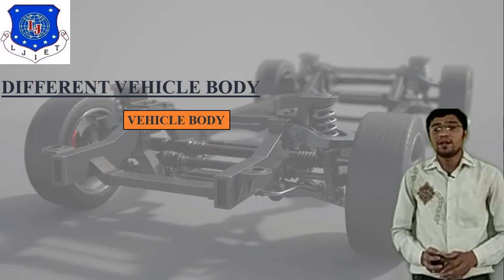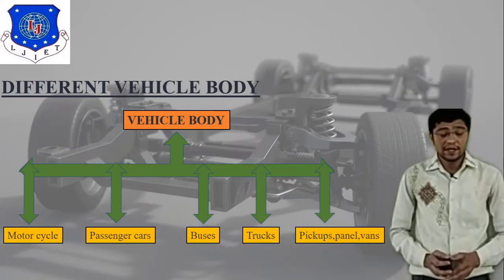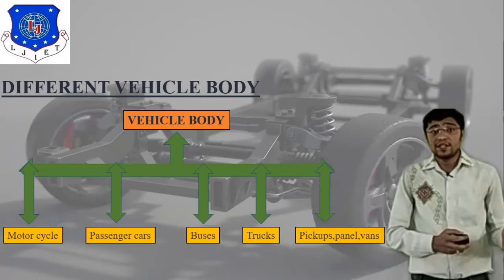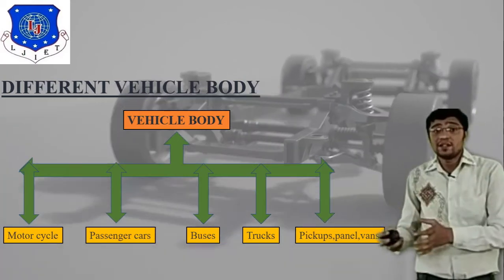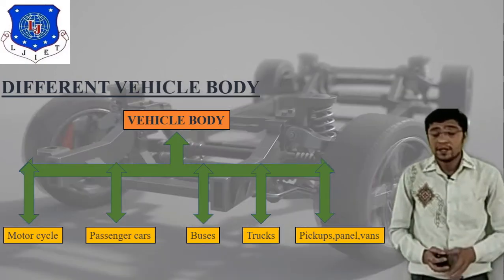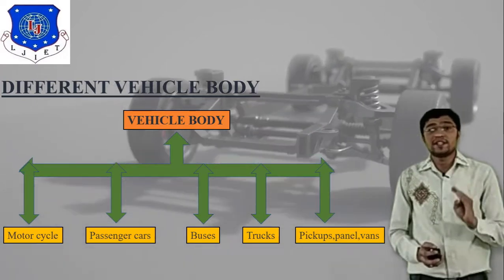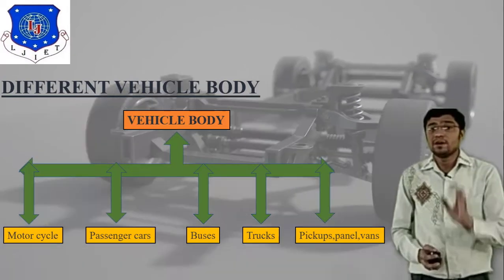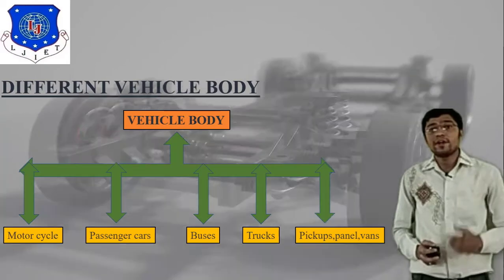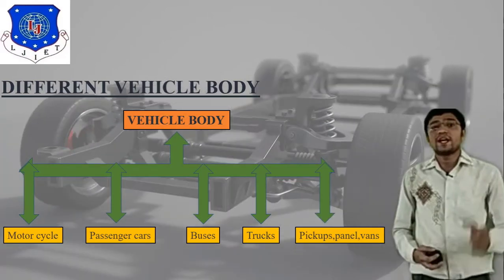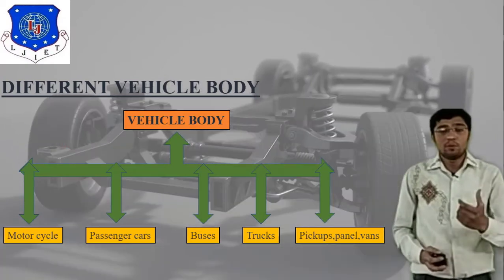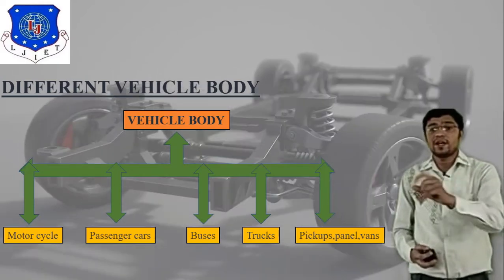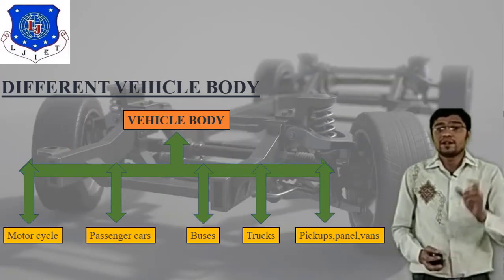Here I have attached one table directly related to classification of vehicle body. There are five different types of vehicle body, and according to passenger capacity, number of axles, and material, we can classify different types. We will discuss one by one: motorcycle, passenger car, bus, truck, and pickup panel van.